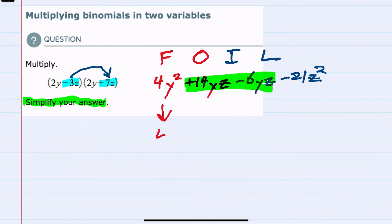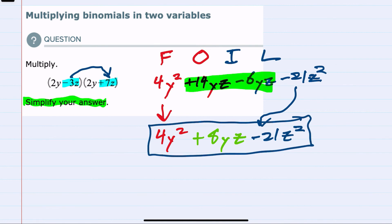We can bring down the 4y squared, since it's the only y squared term. Combining these middle terms, though, we have a 14yz and a minus 6yz. Combining those, we would have 8yz. And then bring down the z squared term, minus 21z squared. Having combined like terms, we have our simplified answer.